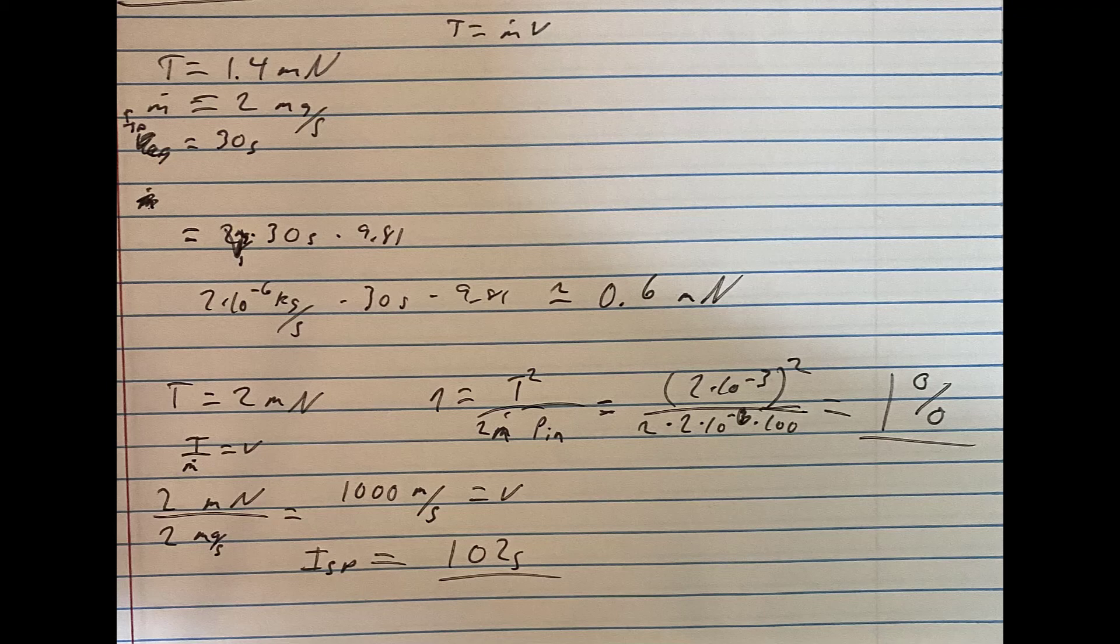Other things you can note, too, if we have the thrust over the mass flow rate, you can get your exhaust velocity from that. So we have 2 mN of 2 mg per second, which gave us about 1,000 m per second exhaust velocity, which for specific impulse, you divide that by roughly 10, and we got a specific impulse of 100 seconds, which I guess is slightly better than the 30 seconds we would have gotten if we had just kept the whole thing cold.